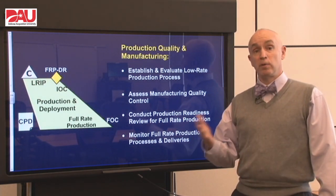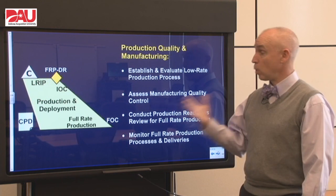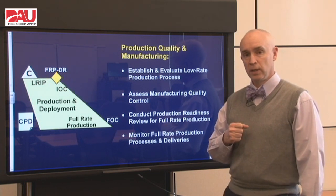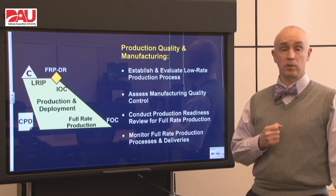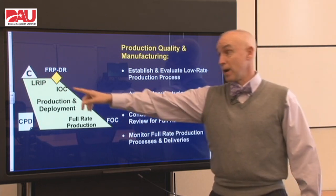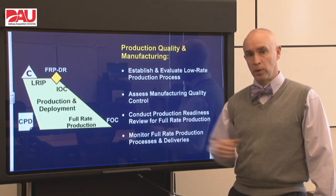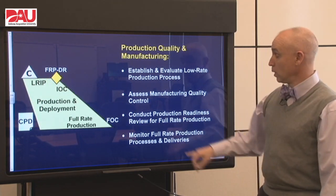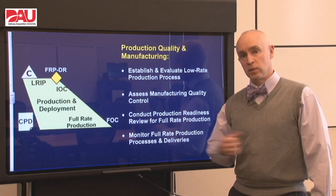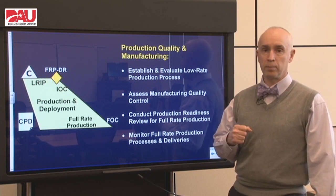Our production quality and manufacturing folks are now really hitting the ground running, assessing how the contractor is doing with production. Do they have quality management in place? Are they tracking variability using statistical process control? They'll also be the focal point for the production readiness review prior to the full rate production decision review, assessing the low rate initial production processes and readiness to ramp up and produce the rest of the buy. They'll also monitor full rate production for quality — making sure what's coming off the line looks as good as it should and the contractor is delivering a quality product.